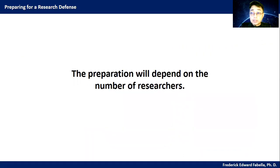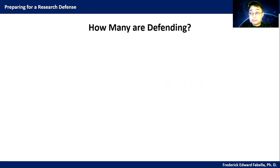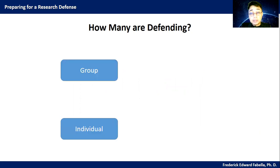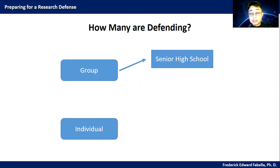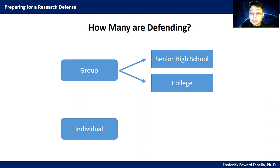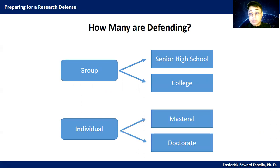So the preparation will depend on the number of researchers doing the study — how many are defending. It could be a group or it could be an individual. Group research defense usually happens at the senior high school or college level. Individual research defense is usually done during the master's and doctorate level.